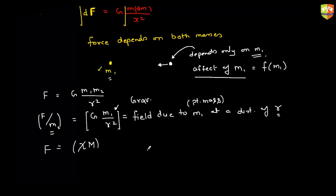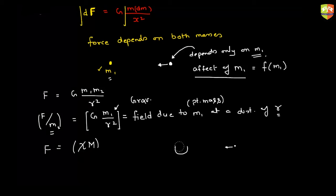Suppose there is a black hole and I want to find out the effect of this black hole at neighboring places. You don't place a mass there and try to find the force — instead, if you know the mass and radius of the black hole, you can find its gravitational field, which depends only on the black hole's own mass and dimensions. There has to be a function which only depends on the surrounding mass.